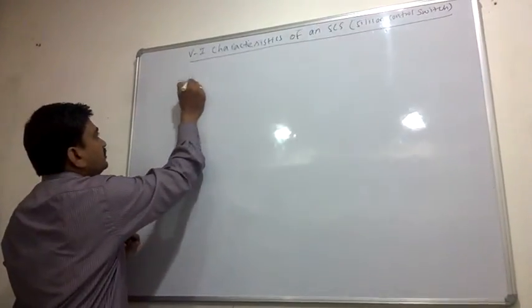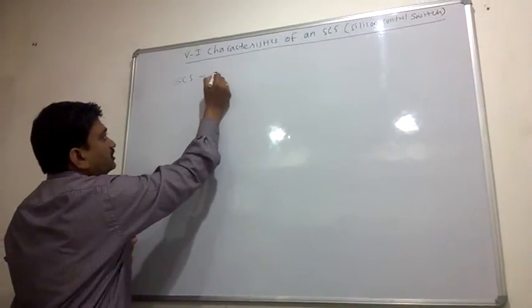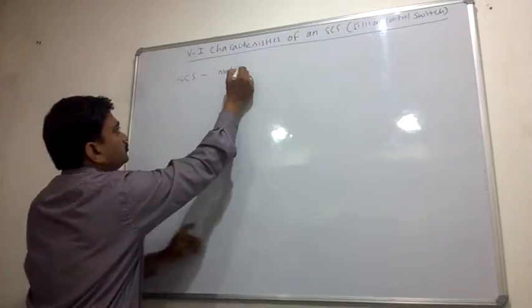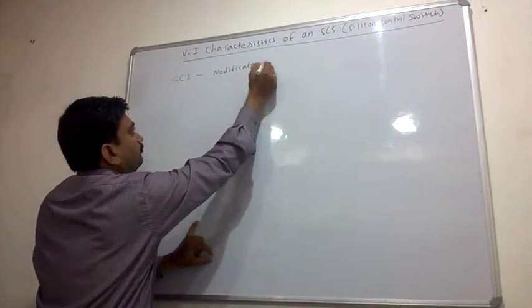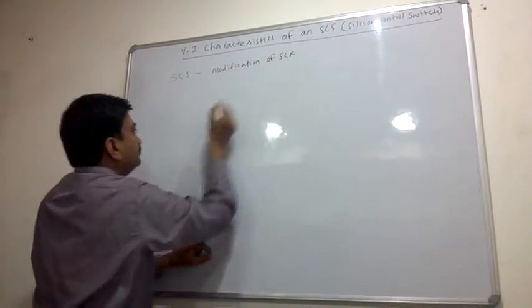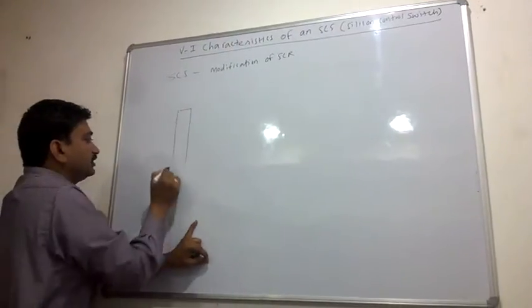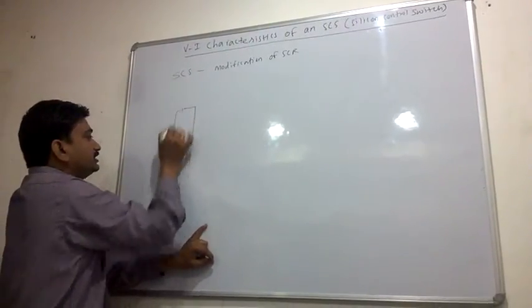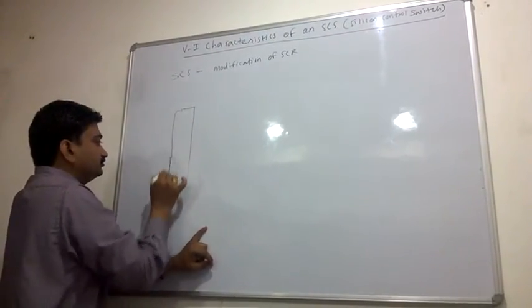SCS is basically a modification of SCR. The key difference is that SCR has only one gate, while SCS has two gates.